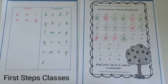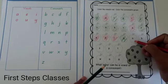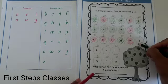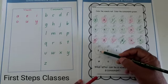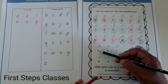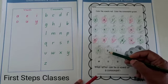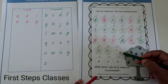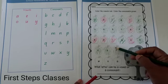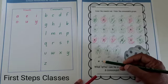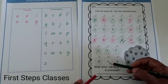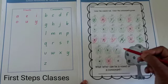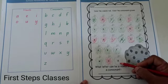The letter O makes the sound O — it's a vowel. B is a consonant and makes the sound B. Z is a consonant and makes the sound Z. P is a consonant and makes the sound P. T is a consonant and makes the sound T. W is a consonant and makes the sound W. O is a vowel and makes the sound O. And A is again a vowel and makes the sound A.